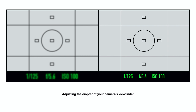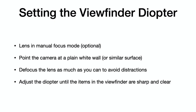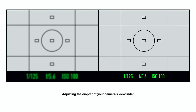But first, let's make sure your camera's viewfinder is in focus. Most cameras have a diopter adjustment controlled by the viewfinder. Use this to make sure the viewfinder is in focus. Put your lens into manual focus mode, point the camera at a plain white wall, defocus the lens as much as you can, then adjust the diopter until the information in the viewfinder is sharp and clear.